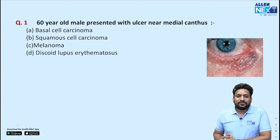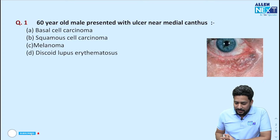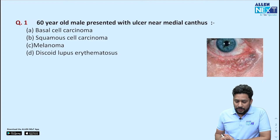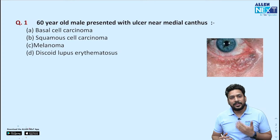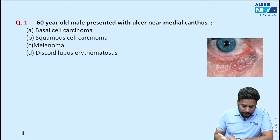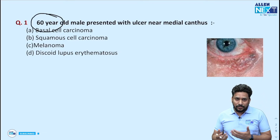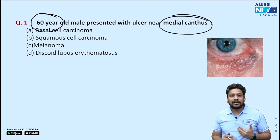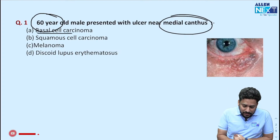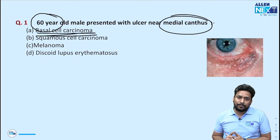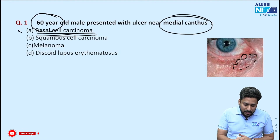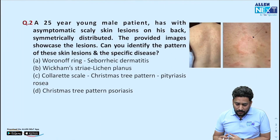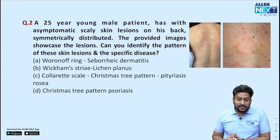Let us discuss the first question. This was an image-based question, and in the image you can see a lesion near the medial canthus. This is a very common question asked in various exams. A 60-year-old patient — old individuals are more prone for malignancies — and the site is very characteristic: the medial canthus is a very common site for basal cell carcinoma. These basal cell carcinomas can present with an ulcer, and the margins or edges are very characteristic rolled edges, as seen in the image.